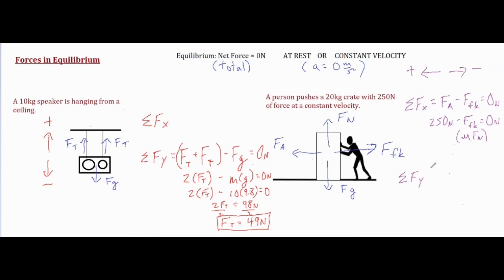Now for the sum of forces in the y direction, we go with the same rules — everything up is positive and everything down is negative — and again that equals zero because there is no vertical movement or acceleration and everything is in equilibrium. For this one, the more technical way of solving for Fn would just be doing Fn minus mg — your mass times 9.8 — equal to zero.